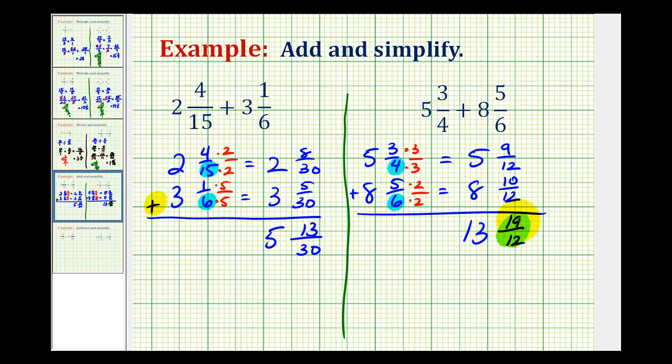So what we're going to do now is take nineteen-twelfths and write it as a mixed number. To do that, we'll divide nineteen by twelve. There's one twelve in nineteen with a remainder of seven. So that tells us that nineteen-twelfths is equal to one and seven-twelfths.